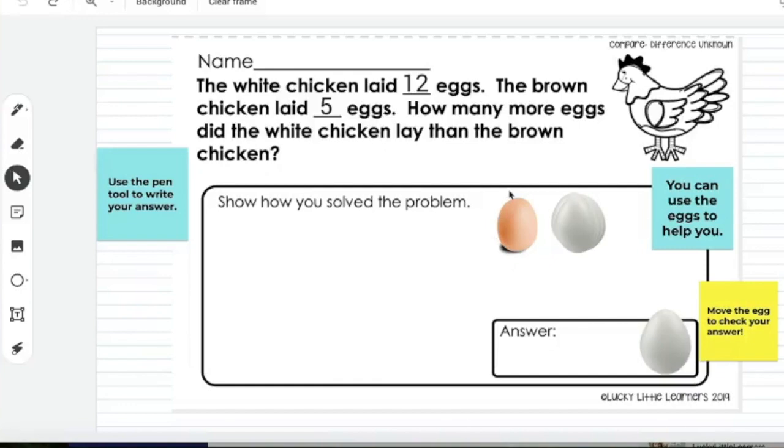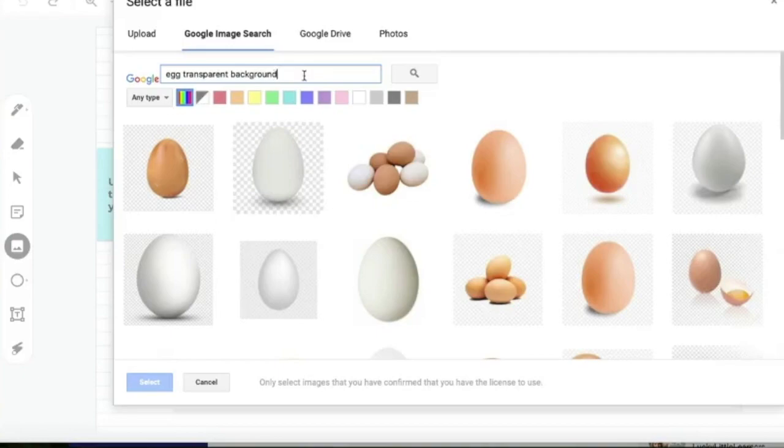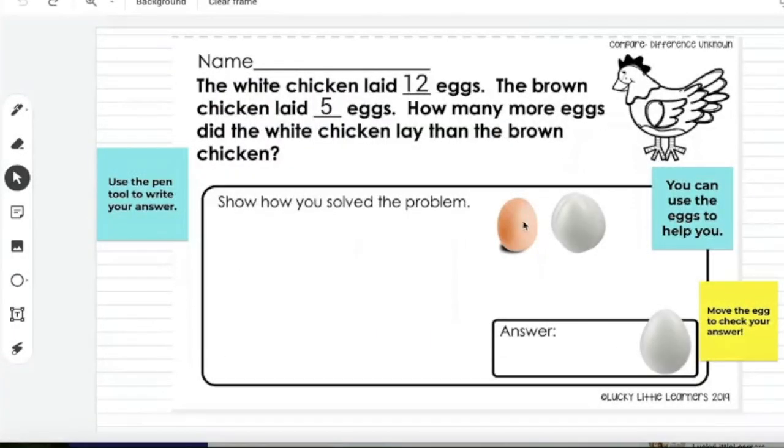So one cool thing you can do with Jamboard is import images. And to do that, we go over to this little mountain and I did a Google image search for an egg with transparent background. I do that just because I don't want these checkered boxes or a big white square behind it. And I had chosen these two and I copied and pasted so that the students would have enough. We've got 12 white eggs here and I have five brown eggs here.